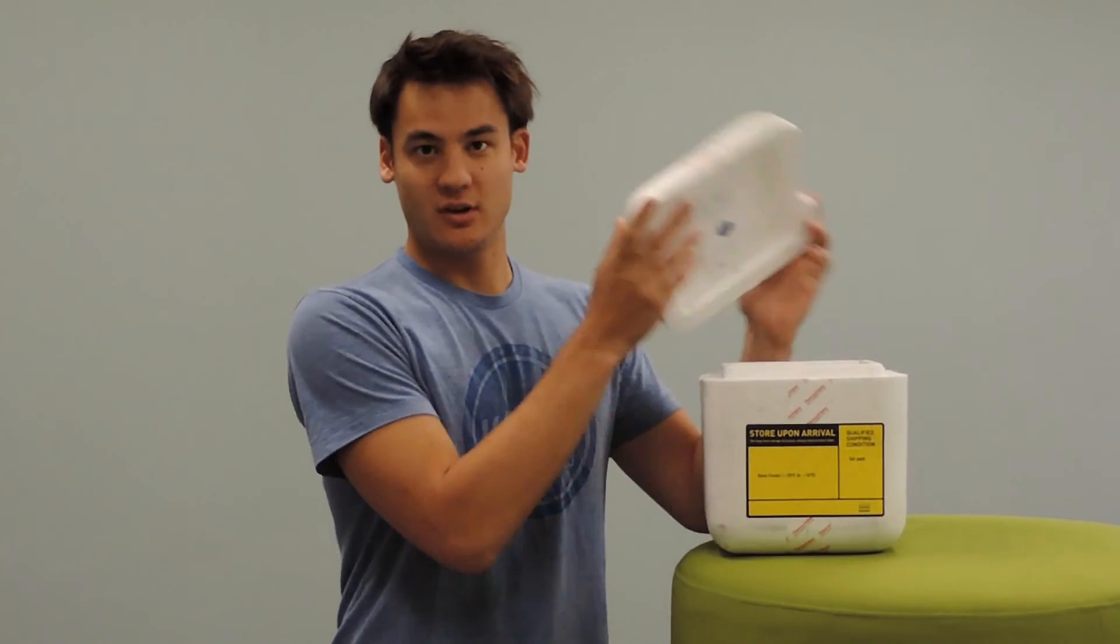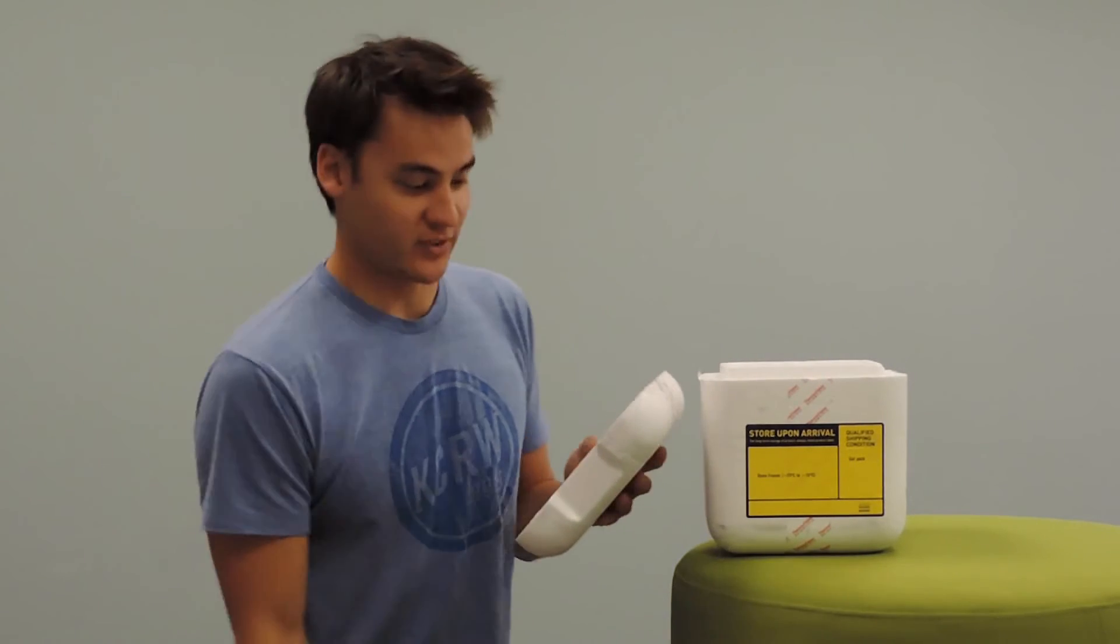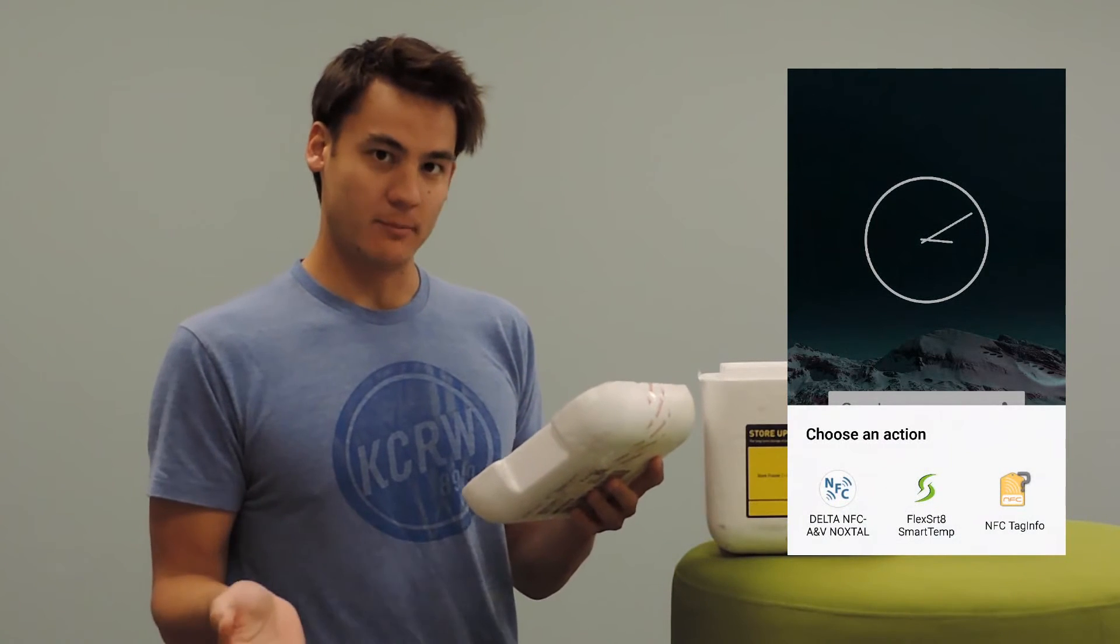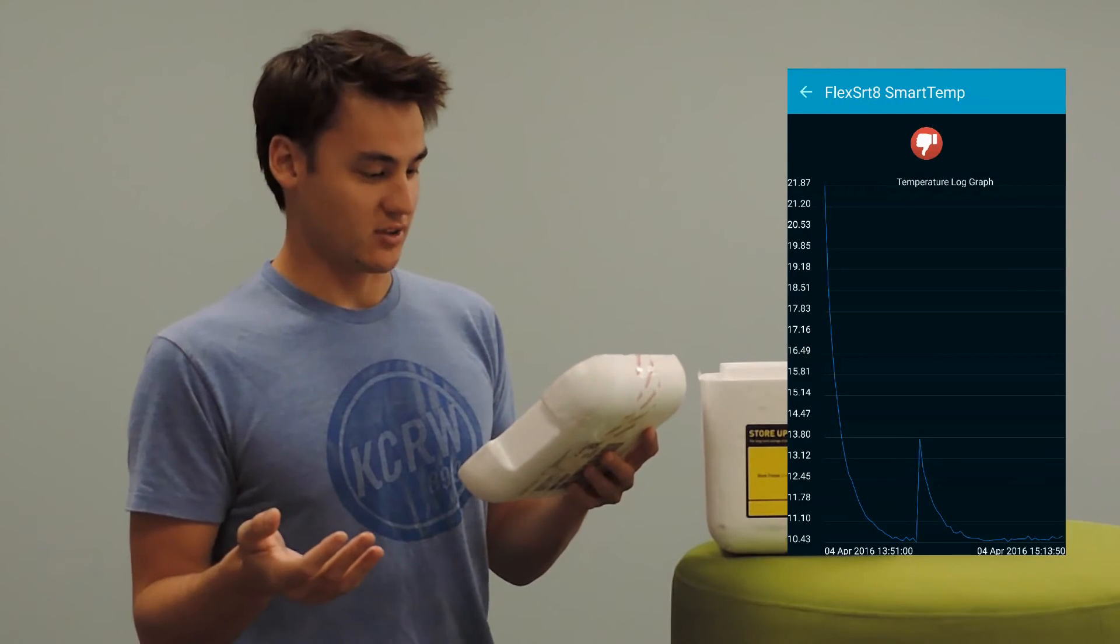All you've got to do is take out the label and once again tap your Android device on the ScanCenter. The app will automatically pop up, but this time it will display a graph of the complete temperature history.